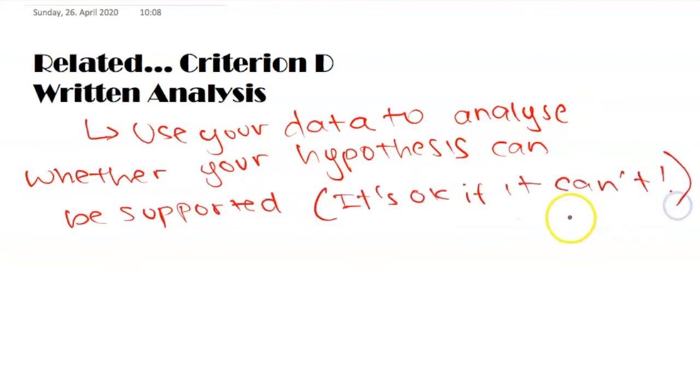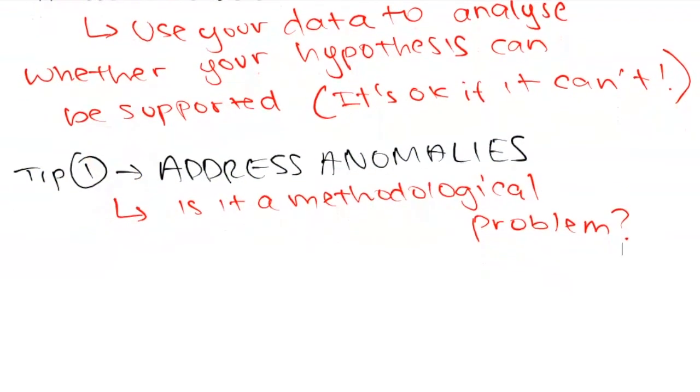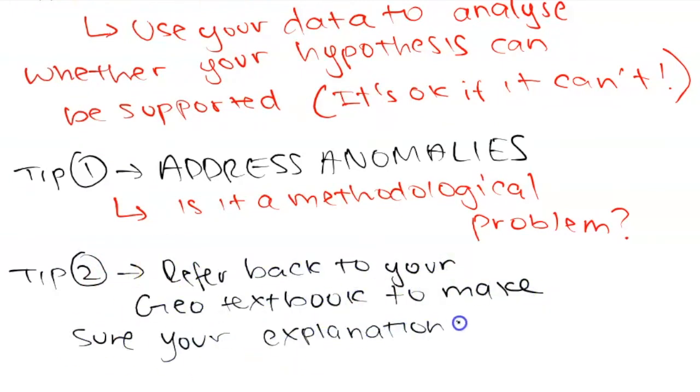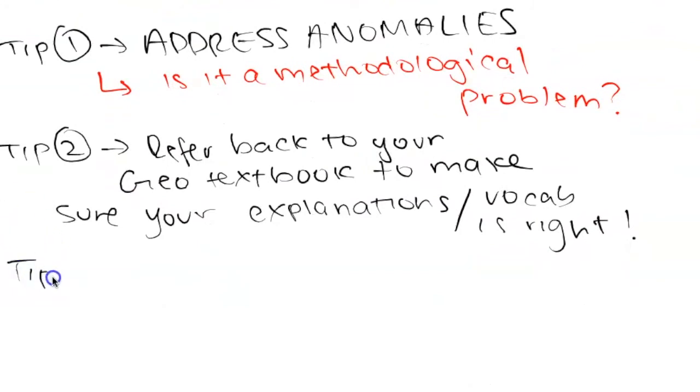And of course, related to this is criterion D, the written analysis, in which you have to make sure that you're using your data to see whether your hypothesis can be supported or not. Do make sure to address anomalies. Students often think that they will get lower grades if they don't address some incongruities in their data. You have to because it allows you to analyze whether it was caused by a methodological error, whether it was something in your methodology that caused this anomaly, or if there's some other factor that's affecting your dependent variable, or it allows you to use geographic theory as to why this might be an exception. Another huge tip that won't take much of your time is to study before writing your IA. Study the unit that your IA is based on so you make sure that your explanations and your vocabulary is right. You want to use as many key terms from geography as possible. So for the tourism unit, things like ecological carrying capacity, touristic hotspots, sphere of influence, tourism life cycle, all of these concepts and vocabulary will show the examiner that you have knowledge.